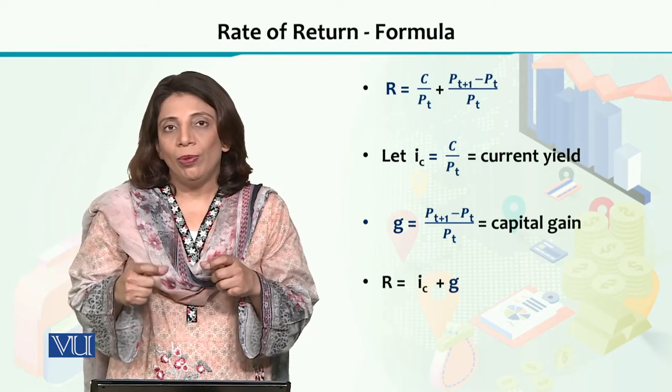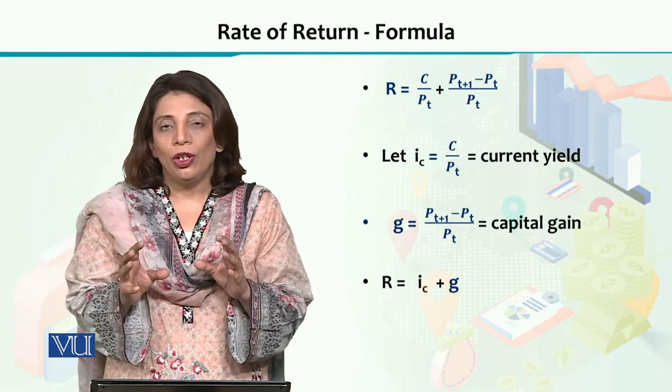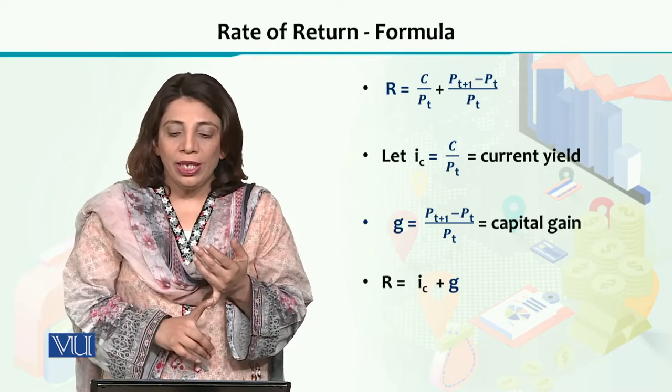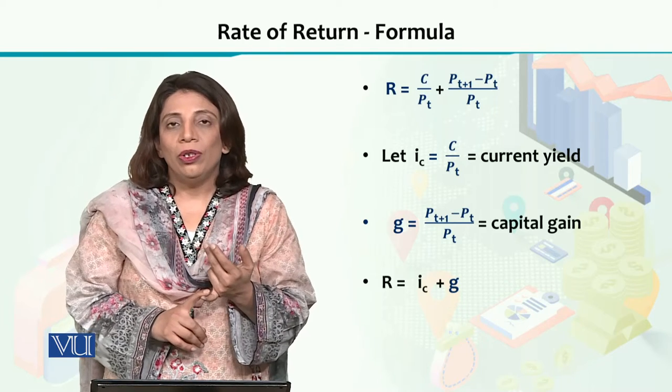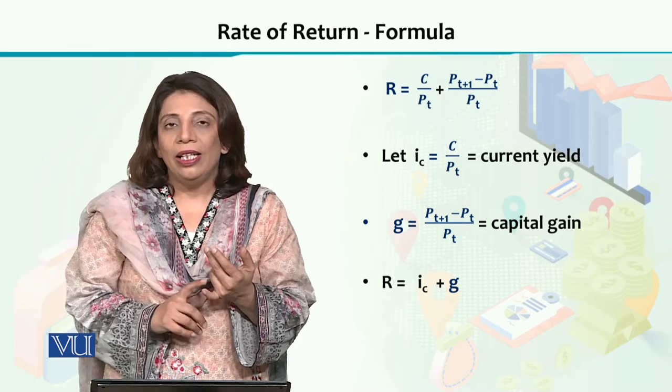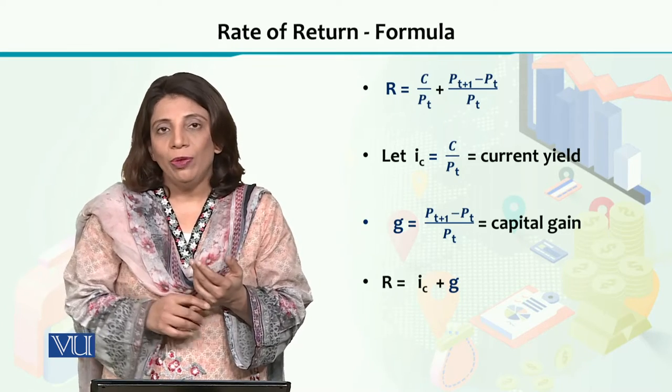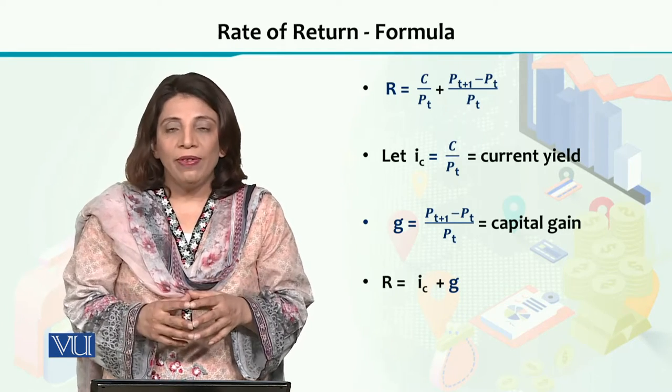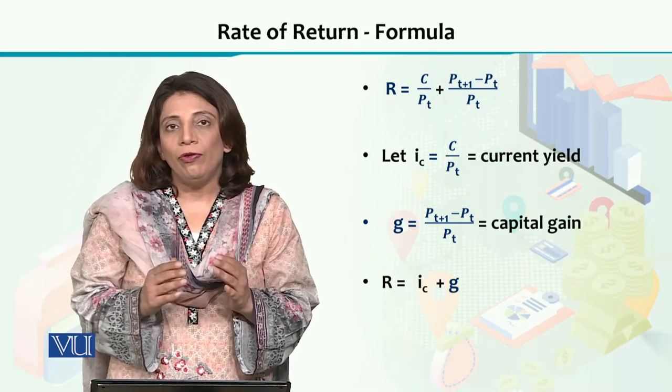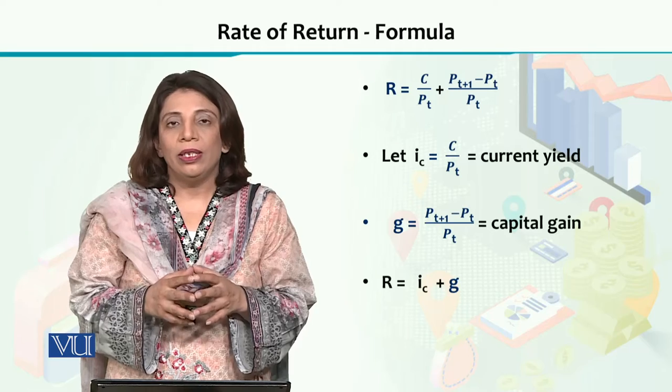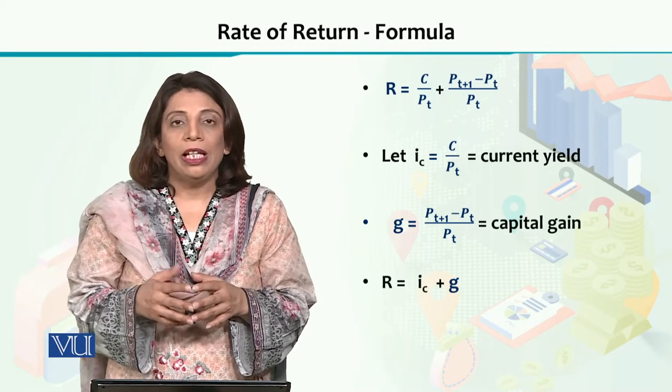The first one is given as the current yield, for which the symbol i_c has been used, and that is equal to C over the initial price which is P_t. So that would give us the value of the current yield. And then the next part of the return formula, which is P_{t+1} minus P_t divided by P_t, gives you the capital gain.